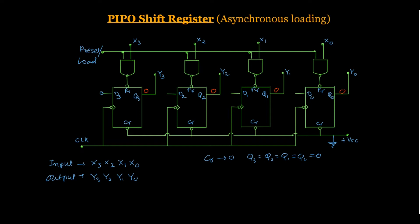Now we apply our input data. Suppose we want to store the data x3, x2, x1, x0 = 1, 1, 0, 1. So here x3=1, x2=1, x1=0, and x0=1. In the preset, remember it is active low. When the preset is 0 (active low), the flip-flop will be in a set condition, so Q will be equal to 1. When the preset is 1, then we have normal operation — whatever the current output is, it will remain as it is.